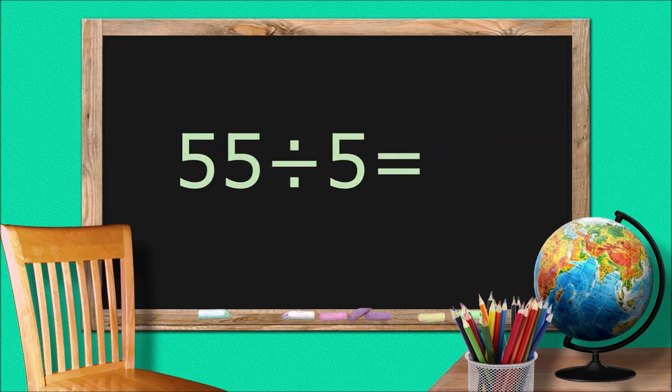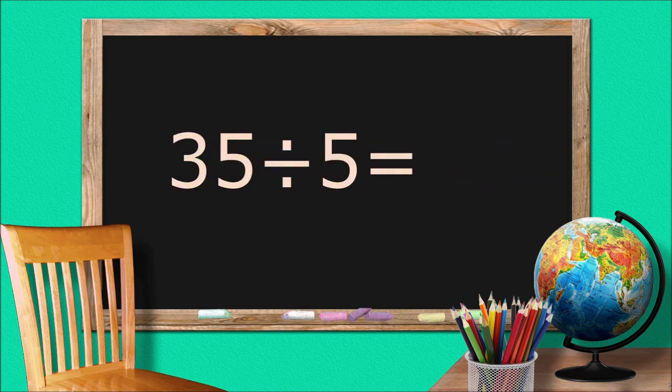Fifty-five divided by five equals eleven. Thirty-five divided by five equals seven.